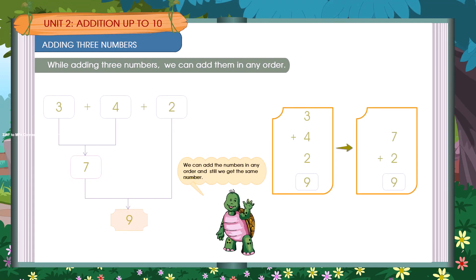3 plus 4 is equal to 7. 7 plus 2 is equal to 9.